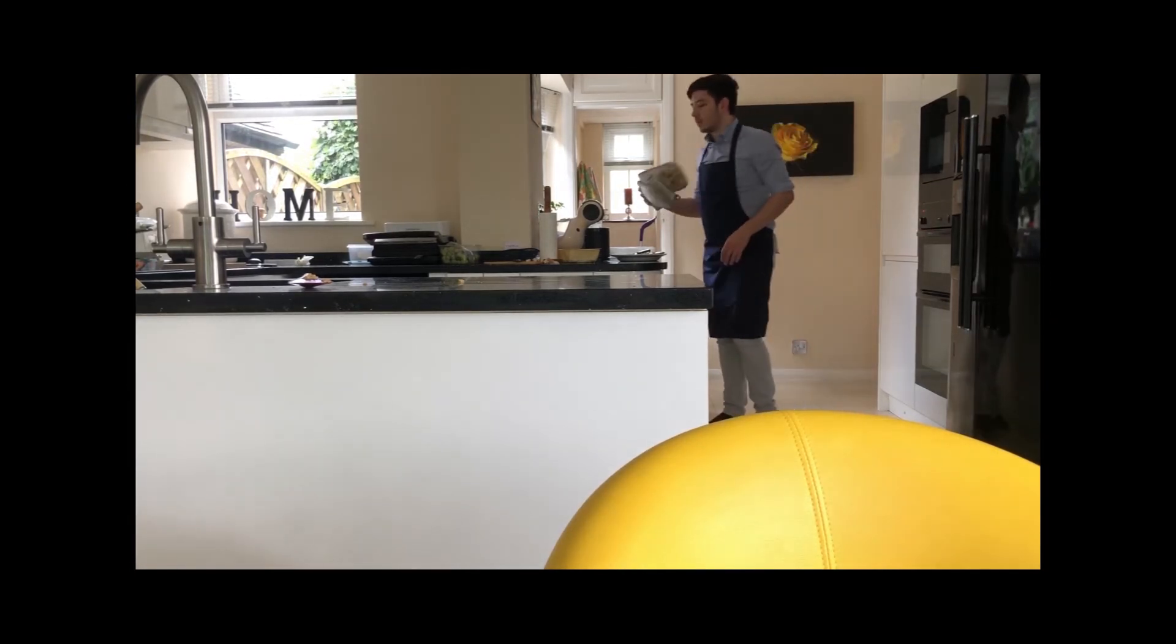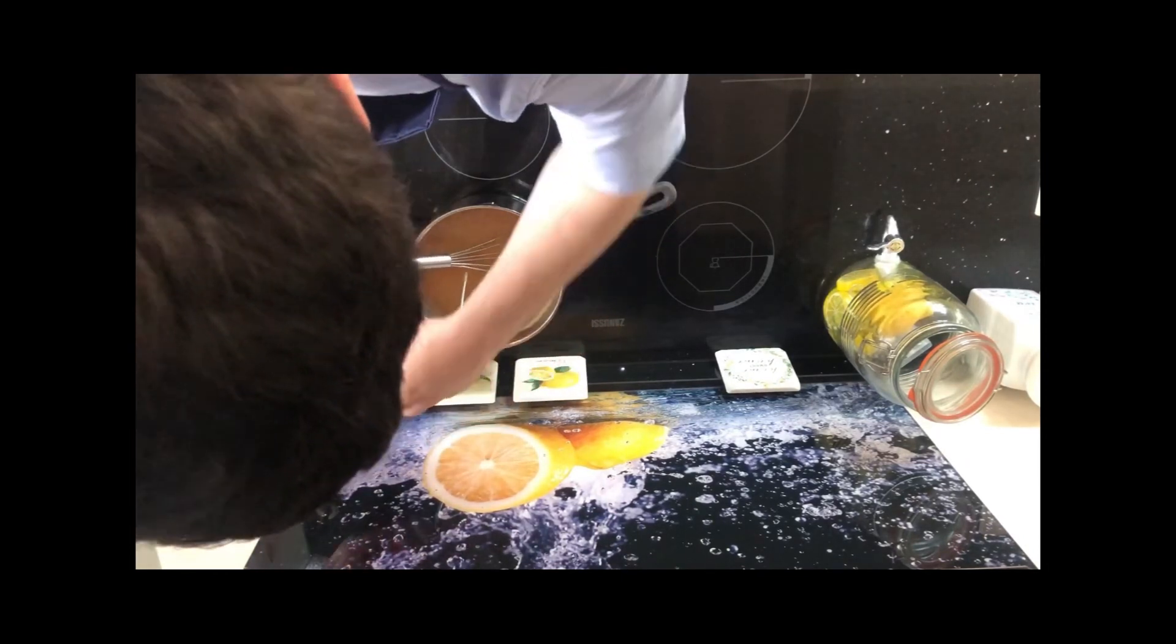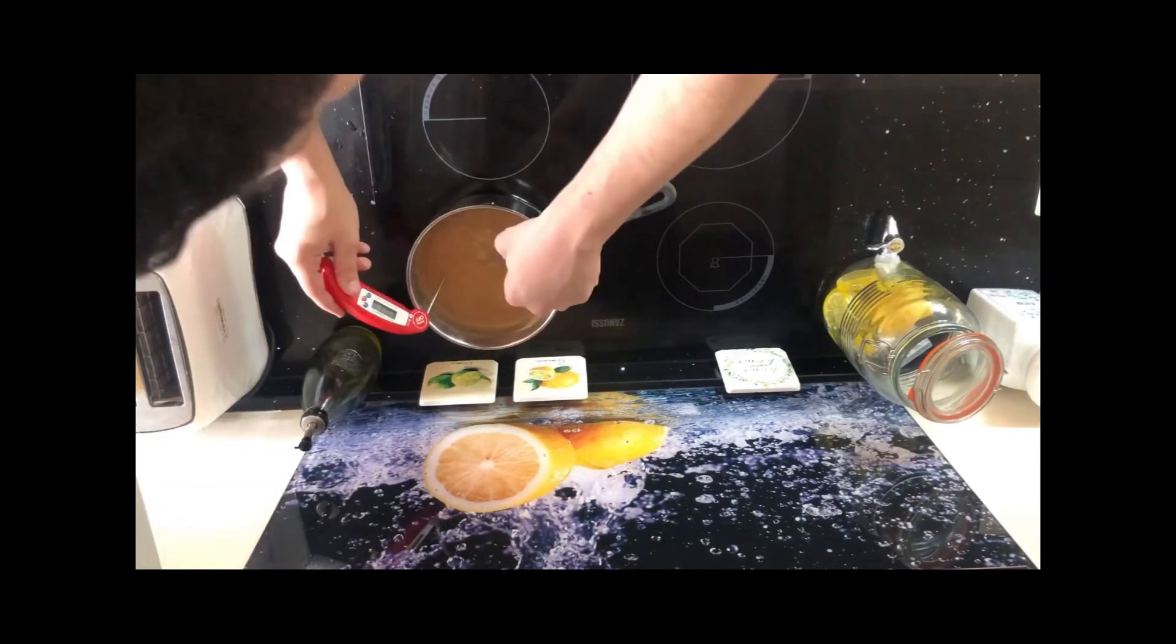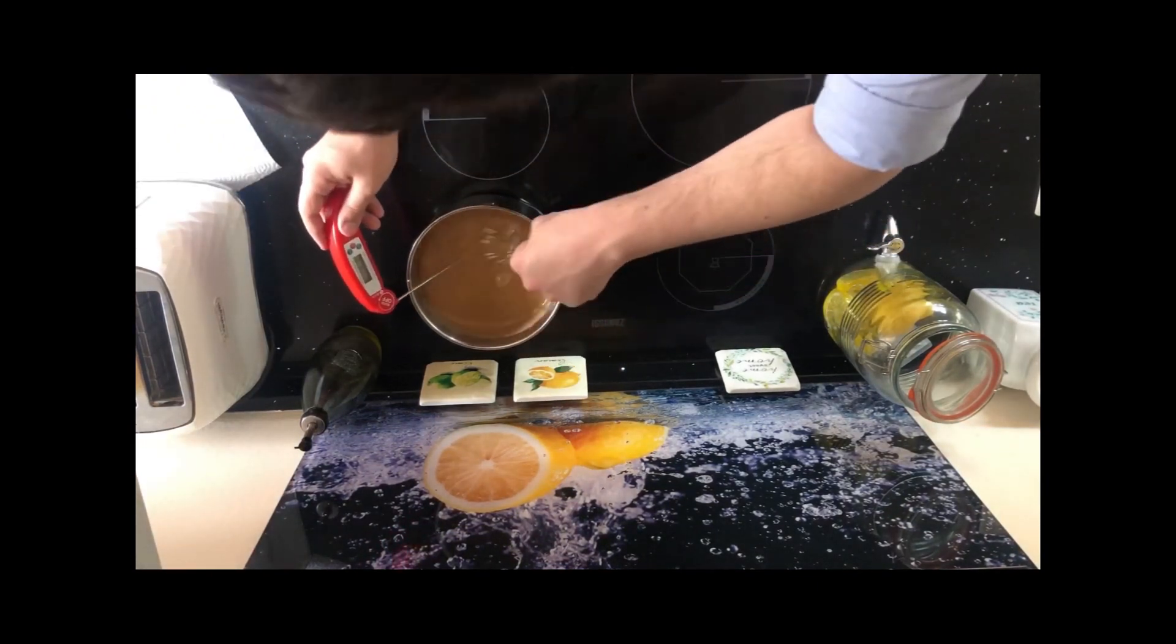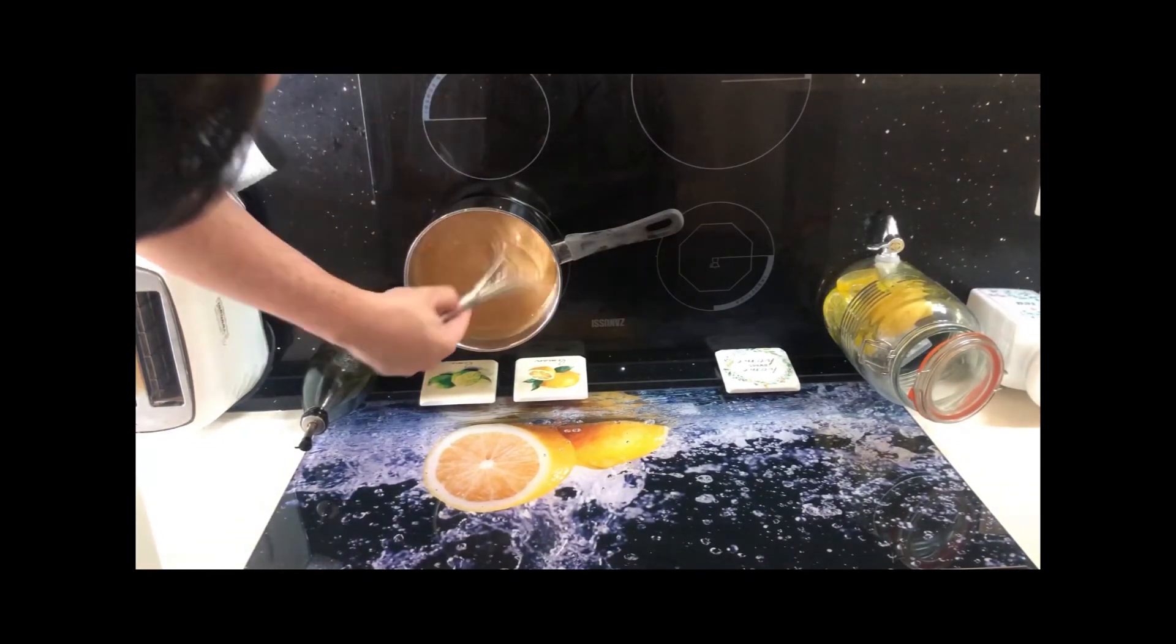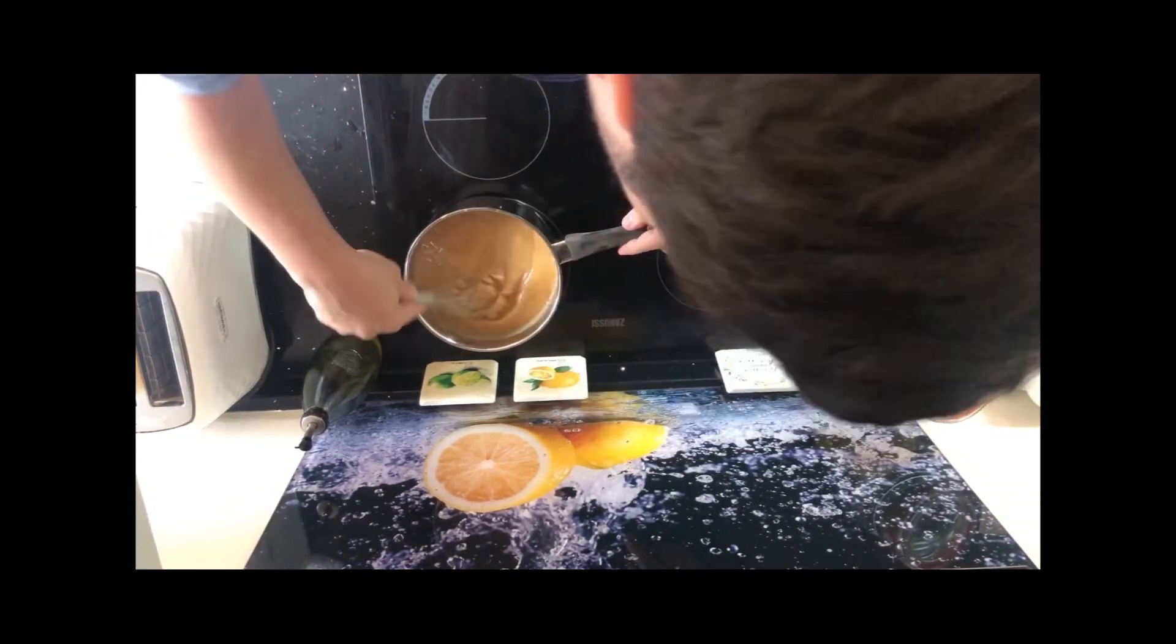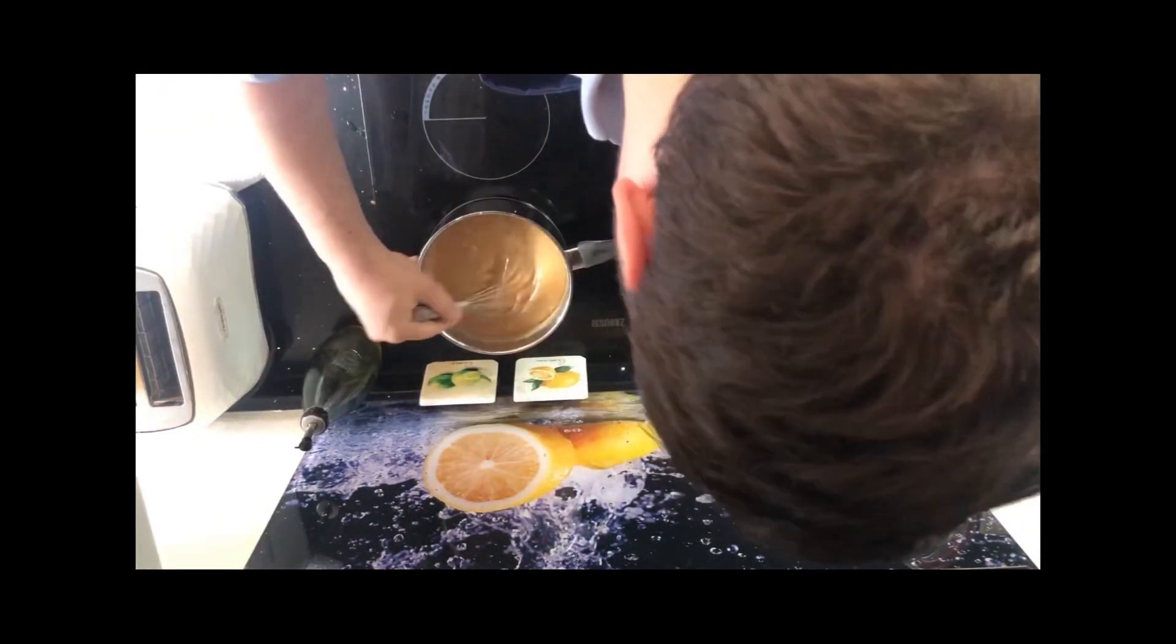So into a pan goes 120 grams of butter, a whole can of condensed milk, 220 grams of brown sugar, a teaspoon of kosher salt, 164 grams of maple syrup, and 120 millilitres of double cream.